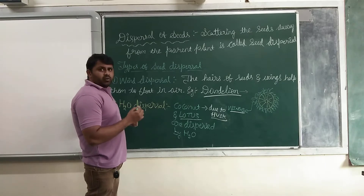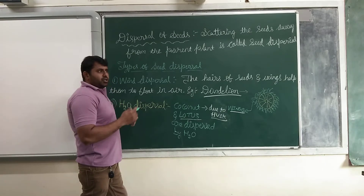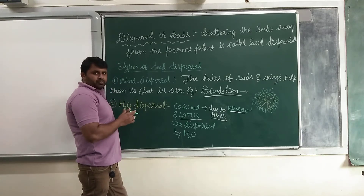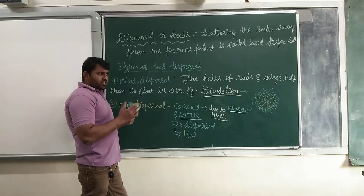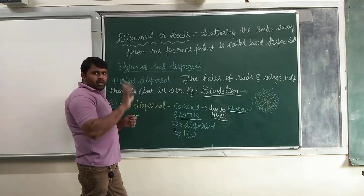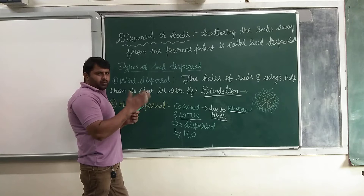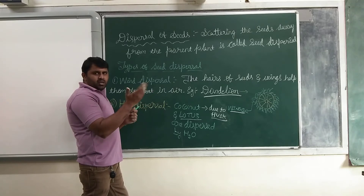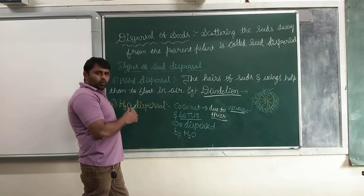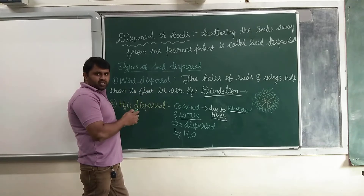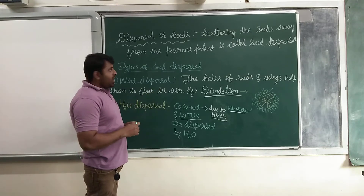In the last class we discussed about plant reproduction. Let's brush up. A plant is a living being which contains roots, leaves, flowers, etc. Reproduction means producing young ones.